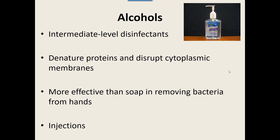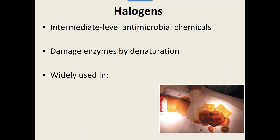Halogens are intermediate-level antimicrobials that kill some pathogenic bacteria. They work by damaging and denaturing enzymes so the microbe ends up dying. Examples include iodine — that's why skin turns brown when treated — used for wound treatment and water purification. Various types of chlorine treatments and bleach are also halogens. They're intermediate level — they don't kill everything. Bleach is a good cleaner and disinfectant, but there are definitely things resistant to it.